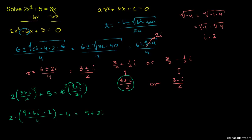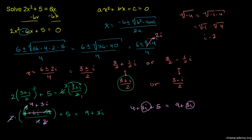Simplifying 9 plus 6i minus 1 gives 8 plus 6i. Dividing numerator and denominator by 2 gives 4 plus 3i over 2; the 2 in front and the 2 in the denominator cancel, leaving 4 plus 3i. Adding 5 to the left-hand side gives 9 plus 3i, which equals the right-hand side, 9 plus 3i. So the root 3 plus i over 2 definitely works.